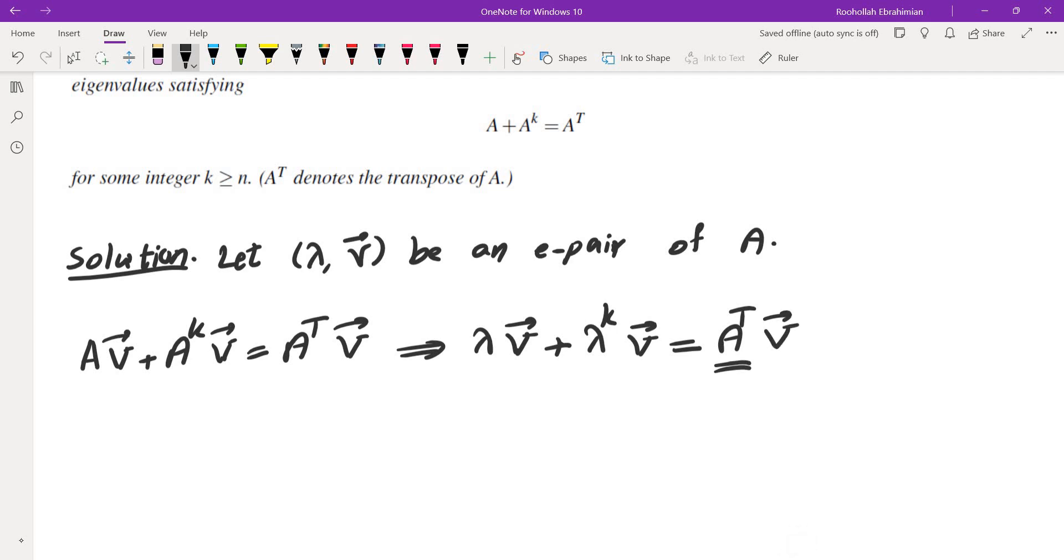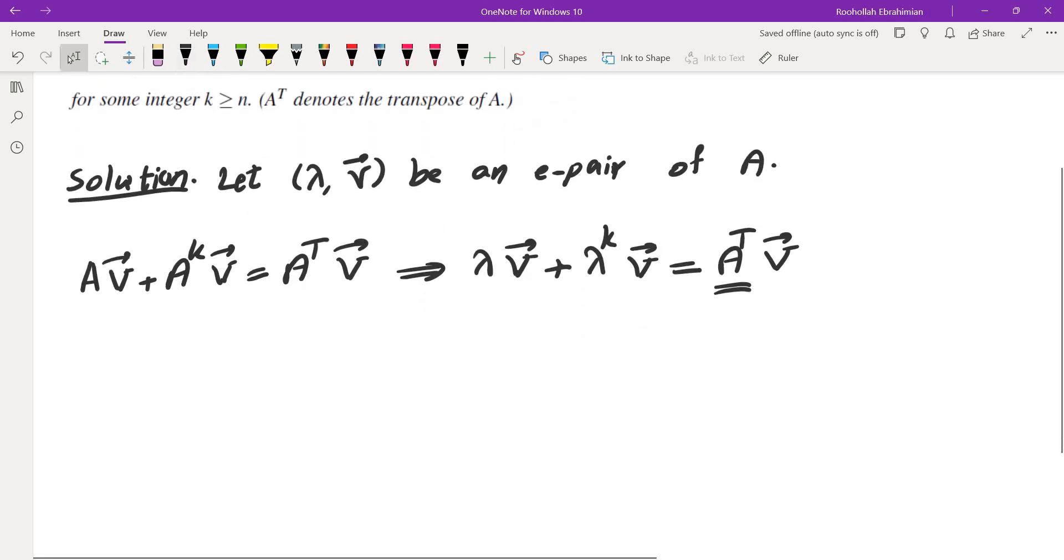Now, I was hoping that I can get rid of A transpose. I remember that if I have A V equals lambda V, I can take the transpose of both sides. So let me write it down.